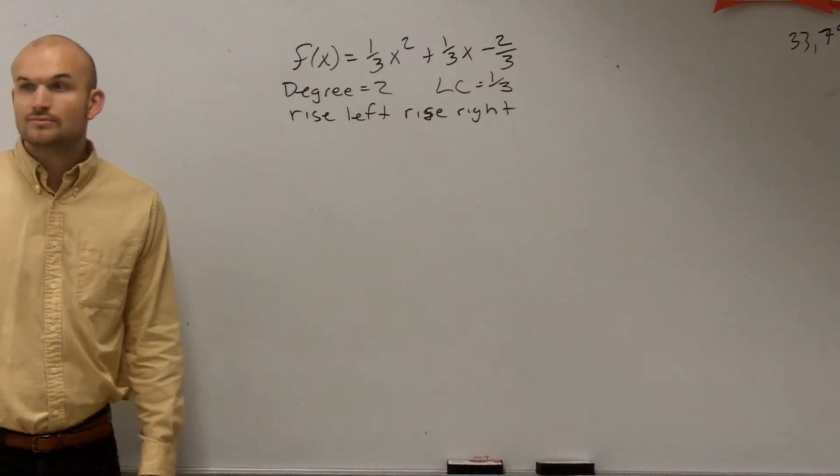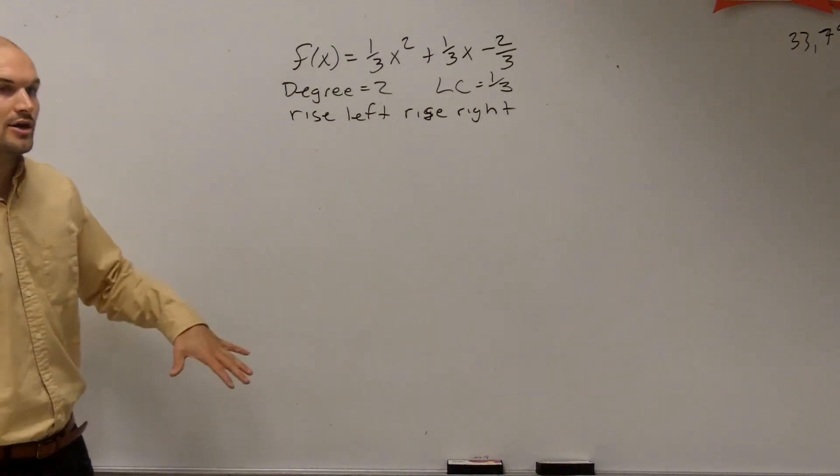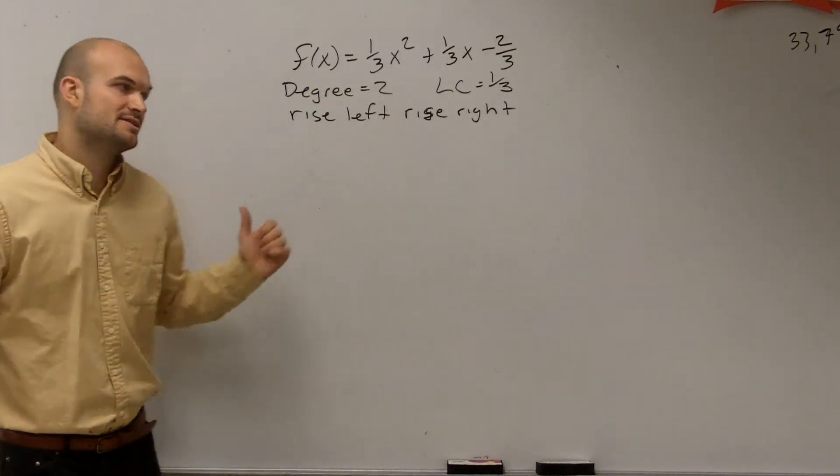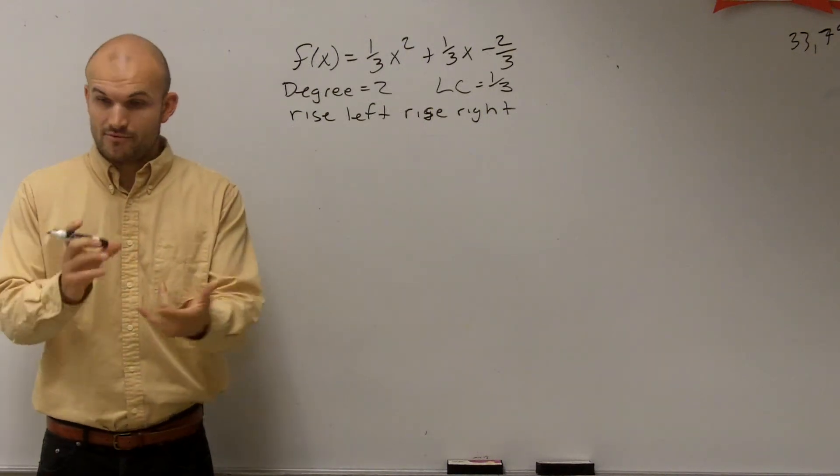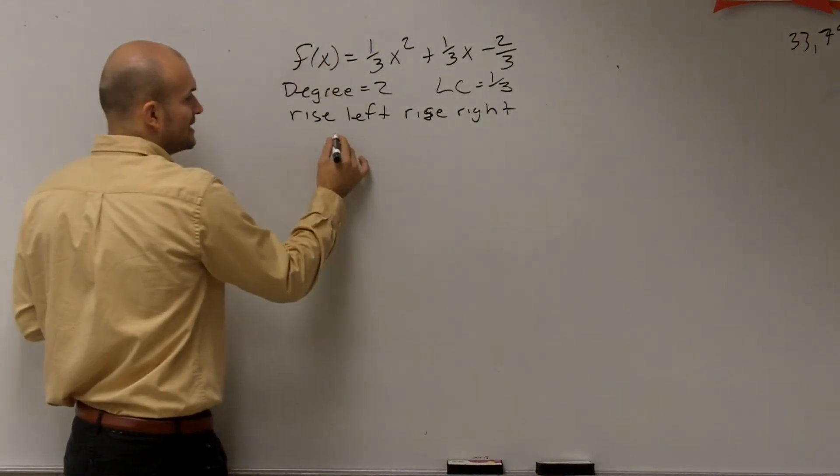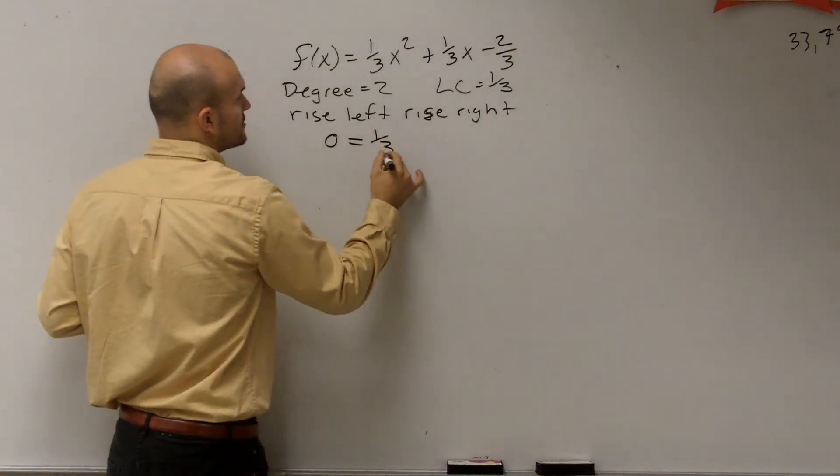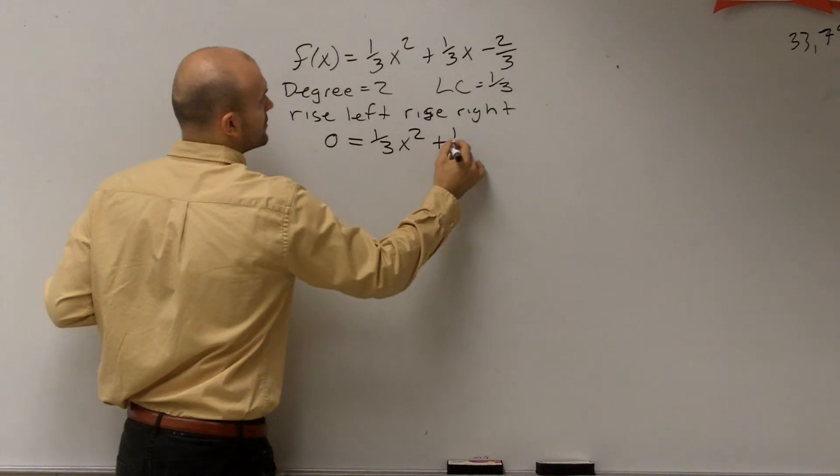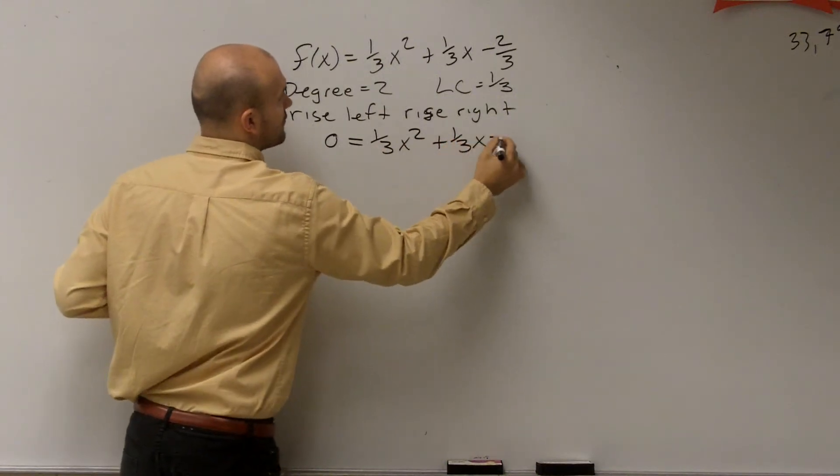End-behavior, out of the way. So we can't understand the multiplicity until we actually find the zeros. So to find the zeros, remember the zeros are going to be the same thing as our x-intercepts, meaning our output value is going to be equal to zero. So now what I need to do is I need to solve for x.